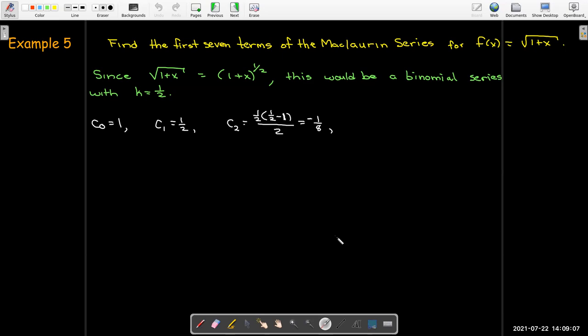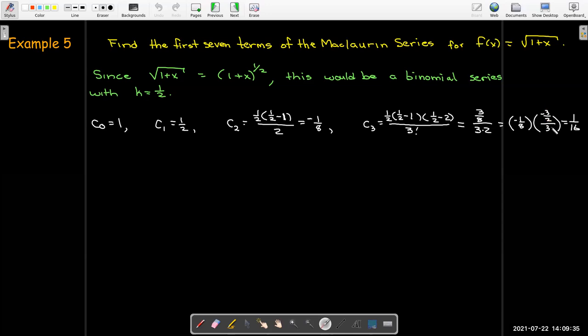The next coefficient will be 1 half, well k times k minus 1 over 2 factorial, and that works out to be negative 1 eighth. And then I would take k times k minus 1 times k minus 2 over 3 factorial, but I could have just taken c sub 2 times k minus 2 over 3. In either case I get 1 sixteenth.